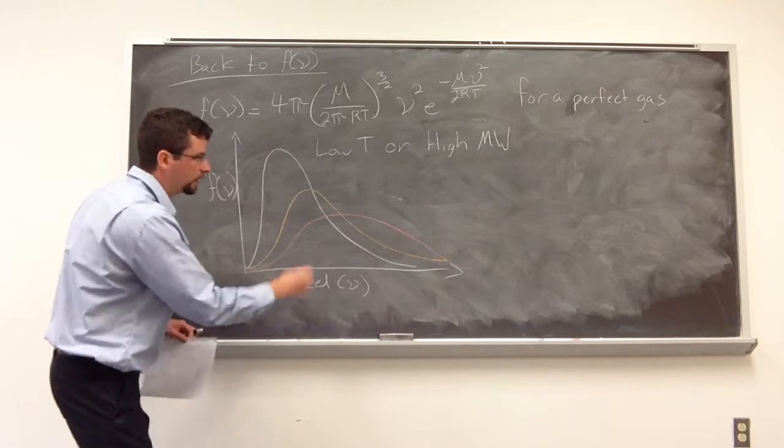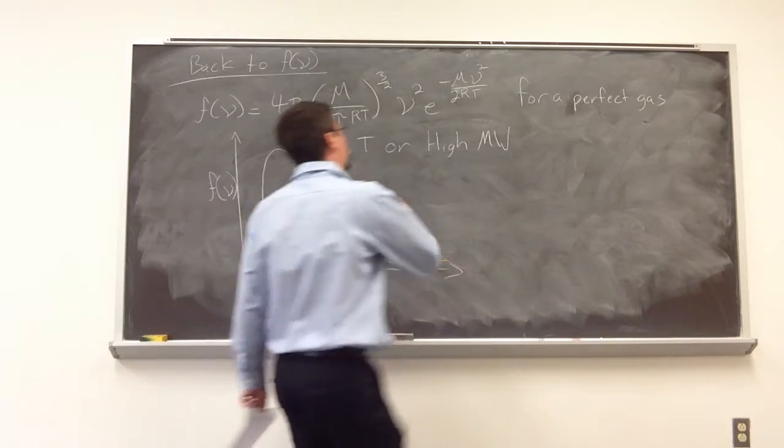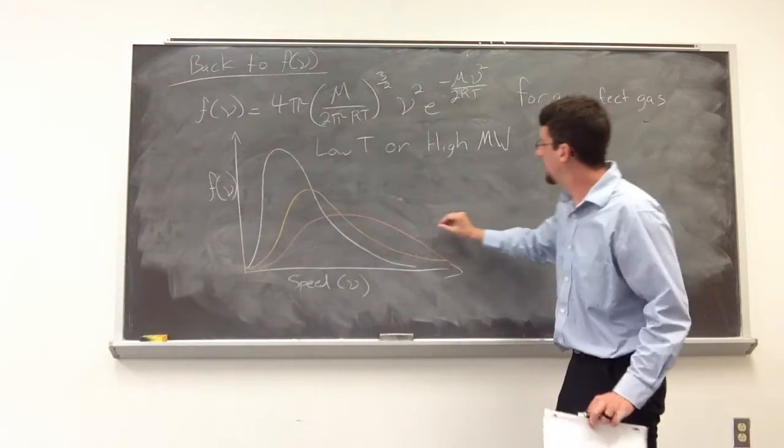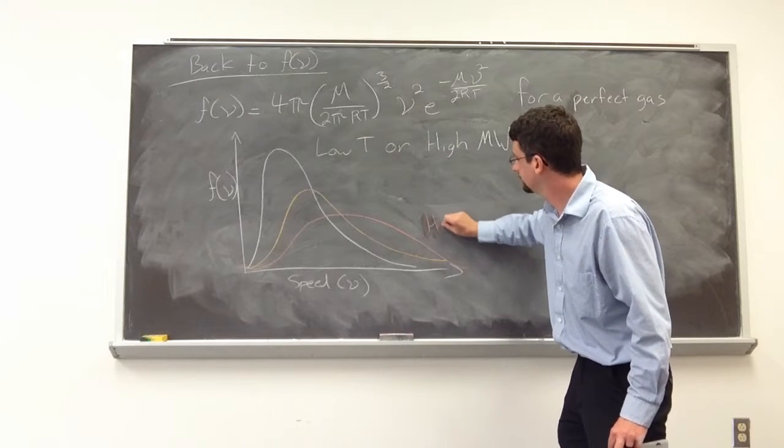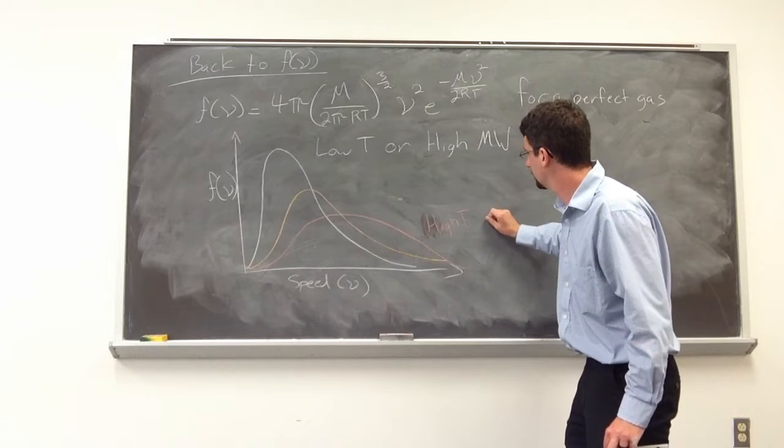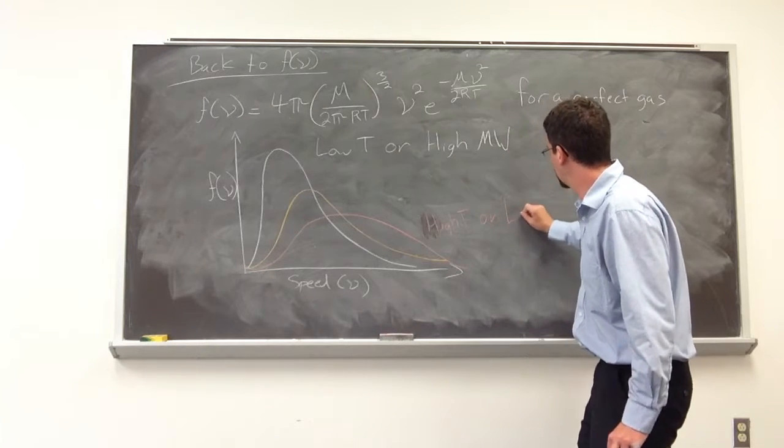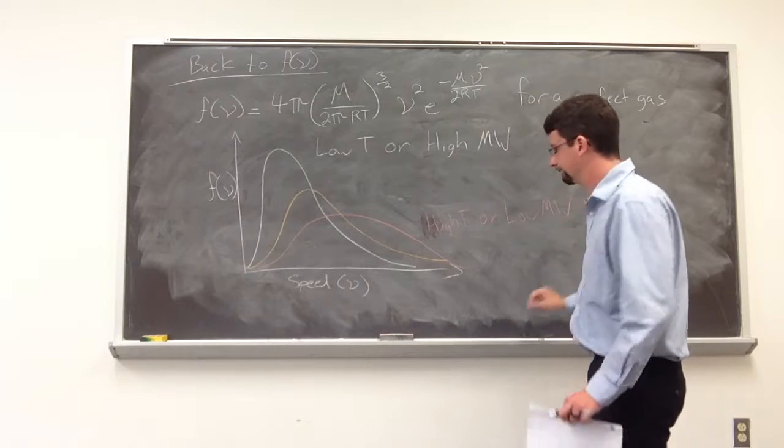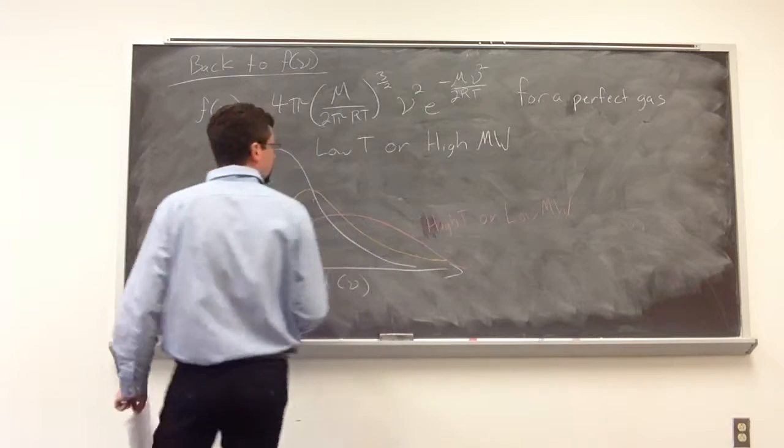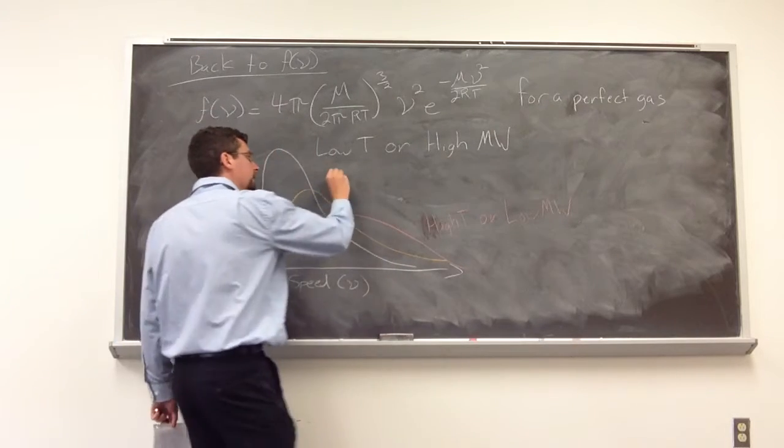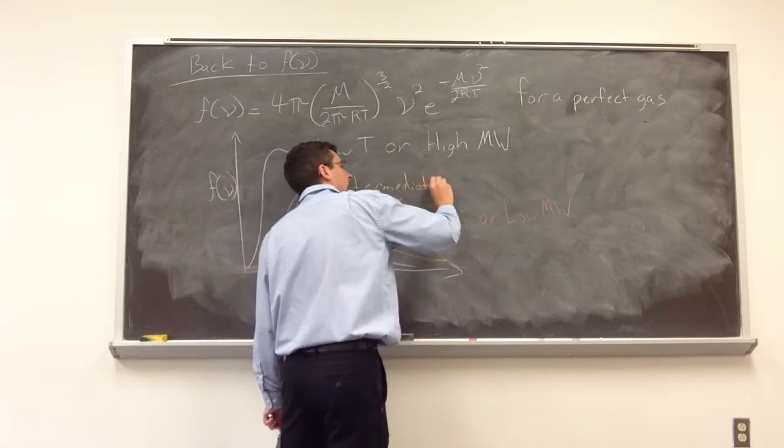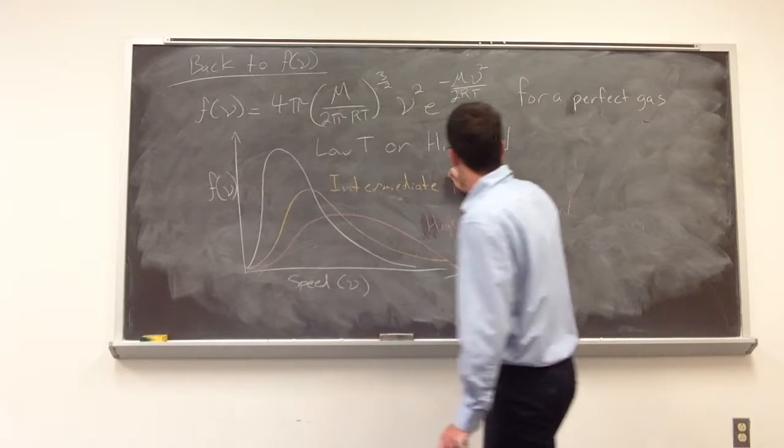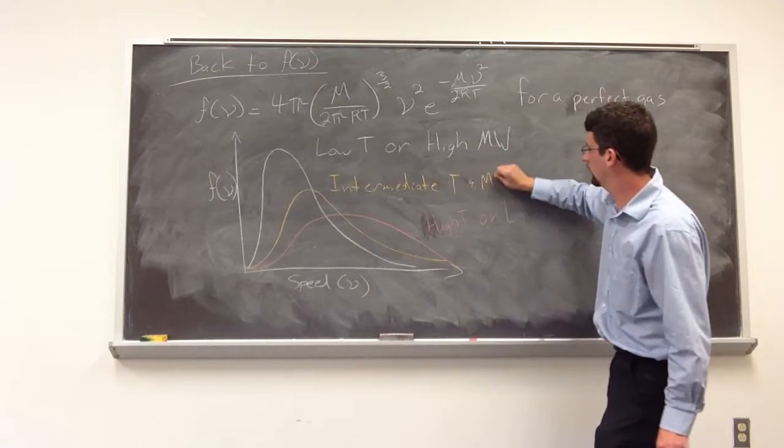The red line that we have, that would be where we're trying to expand out as far as possible. That would be at a high temperature or low molecular weight. And then the orange would be an intermediate, intermediate temperature and molecular weight.